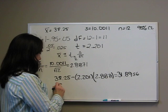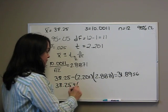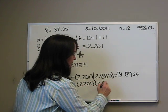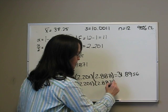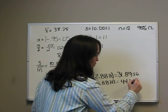Do the same thing, except we add our average: 38.25 plus 2.201 times 2.8871, and we get 44.6044.